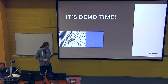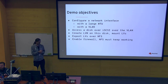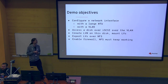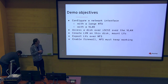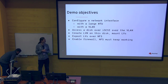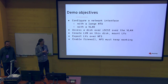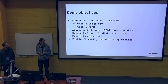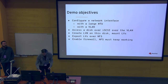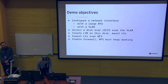Now a demo. The objective is to configure a VM so it has one more configured network interface with a large MTU. I'll create a VLAN, access a disk over iSCSI over this VLAN, create LVM on this disk and mount the logical volumes, export them over NFS, and enable the firewall with NFS working. I'll use a video recording because the network here is too slow.